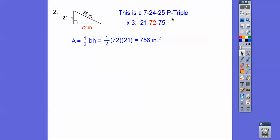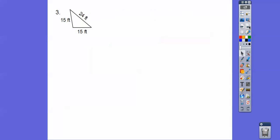25 times 3 is 75. So it's a P-triple. P-triples are going to be popping up for the rest of this school year. So then once we know the base, area is one half base times height. So 72 times 21. There goes my coffee. And I get 756 inches squared.